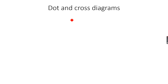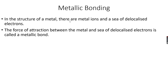Now that we have done dot and cross diagrams, we come to metallic bonding. Metallic bonding is basically the bonding in the structure of a metal, and it's a very important type of bonding because it gives metals all their properties. In the structure of a metal, there are not atoms but metal ions, because they have lost electrons, and these lost electrons form a sea of delocalized electrons.